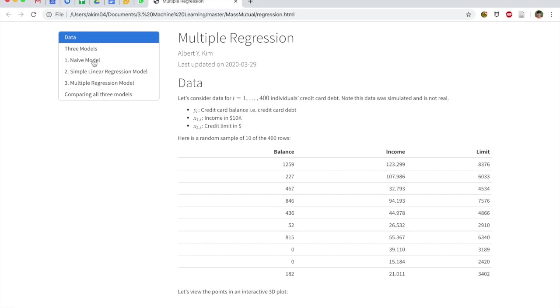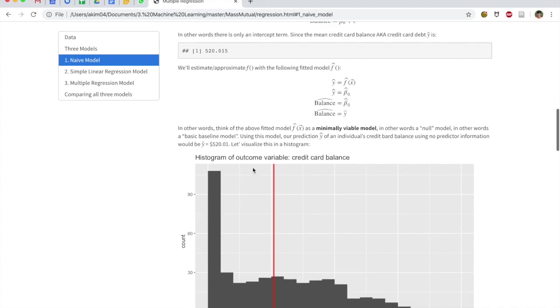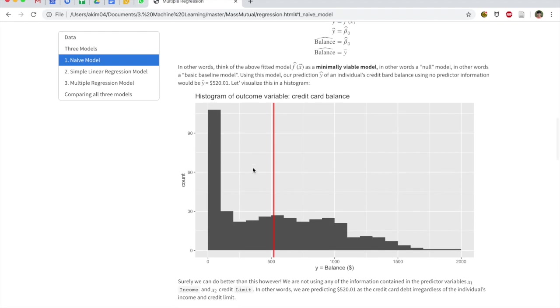Okay, so first things first, let's take a look at our naive model. Now, the naive model is—and everybody remember this number—that the average of all the Y's, the Y-bar, is $520.01.